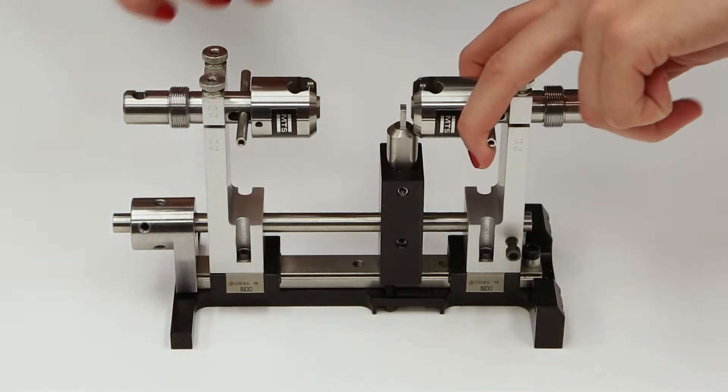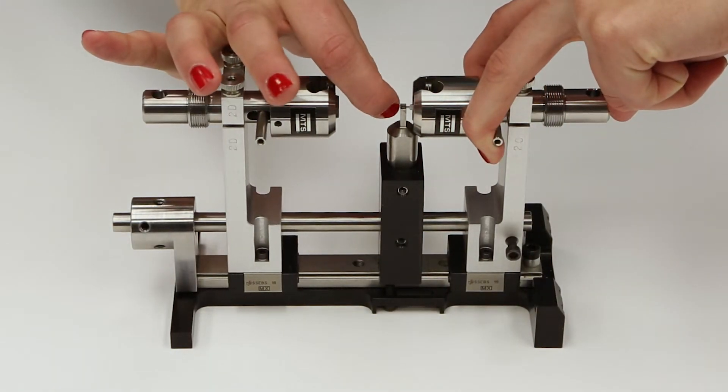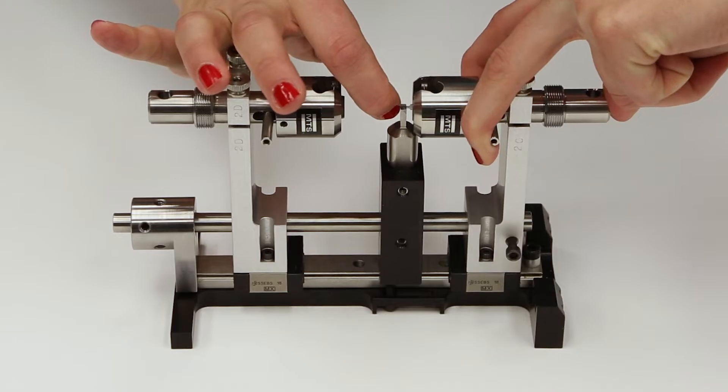Installing the specimen is as simple as placing it in the holder while opening the grip jaws and releasing the jaw on the specimen.